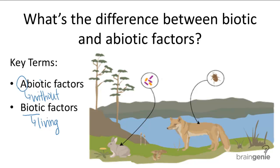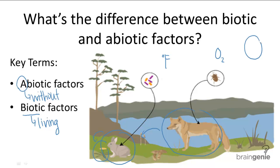Biotic or living factors are the organisms and the relationships between other organisms — like this rabbit and its relationship with this fox, or this rabbit and its relationship with the dandelion. All these are biotic factors. Abiotic or non-living factors include things like temperature, oxygen supply, sunlight, the presence of water, and soil type — all these are abiotic factors.